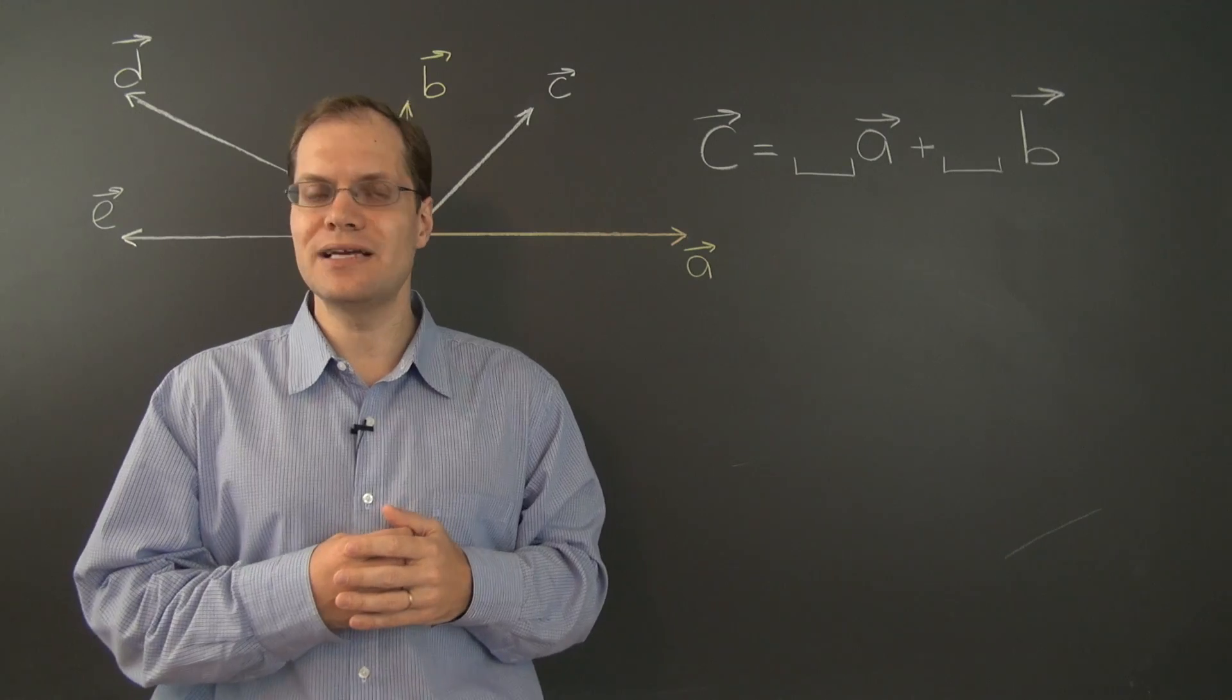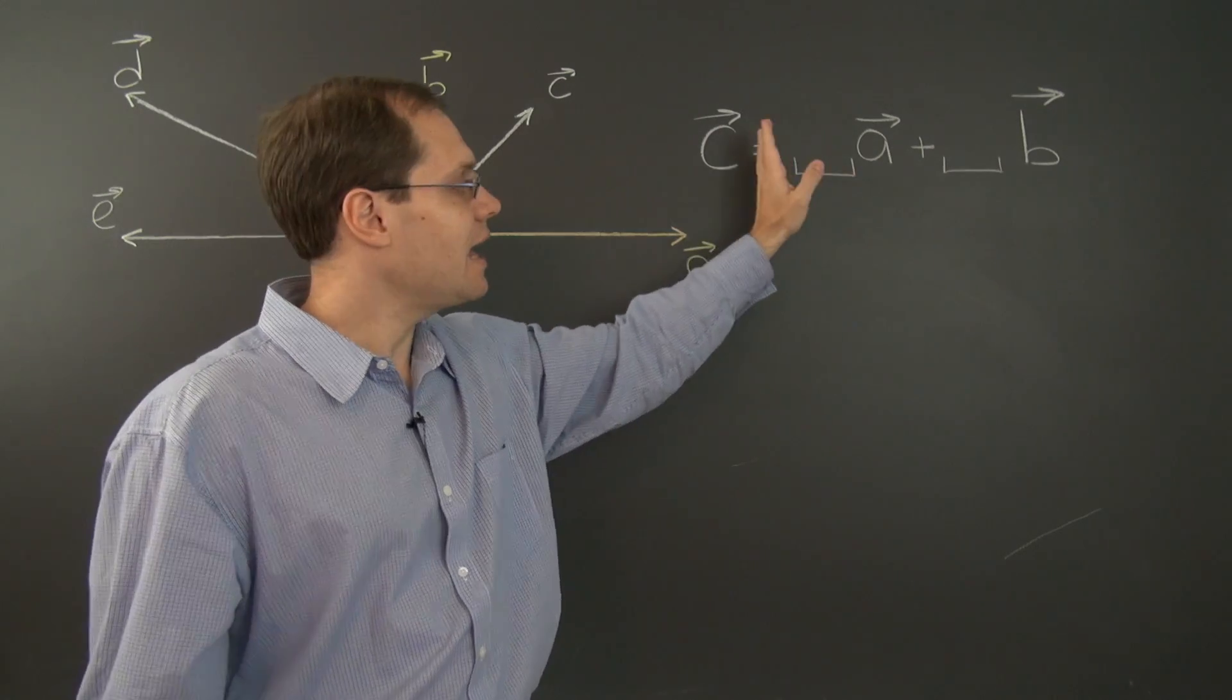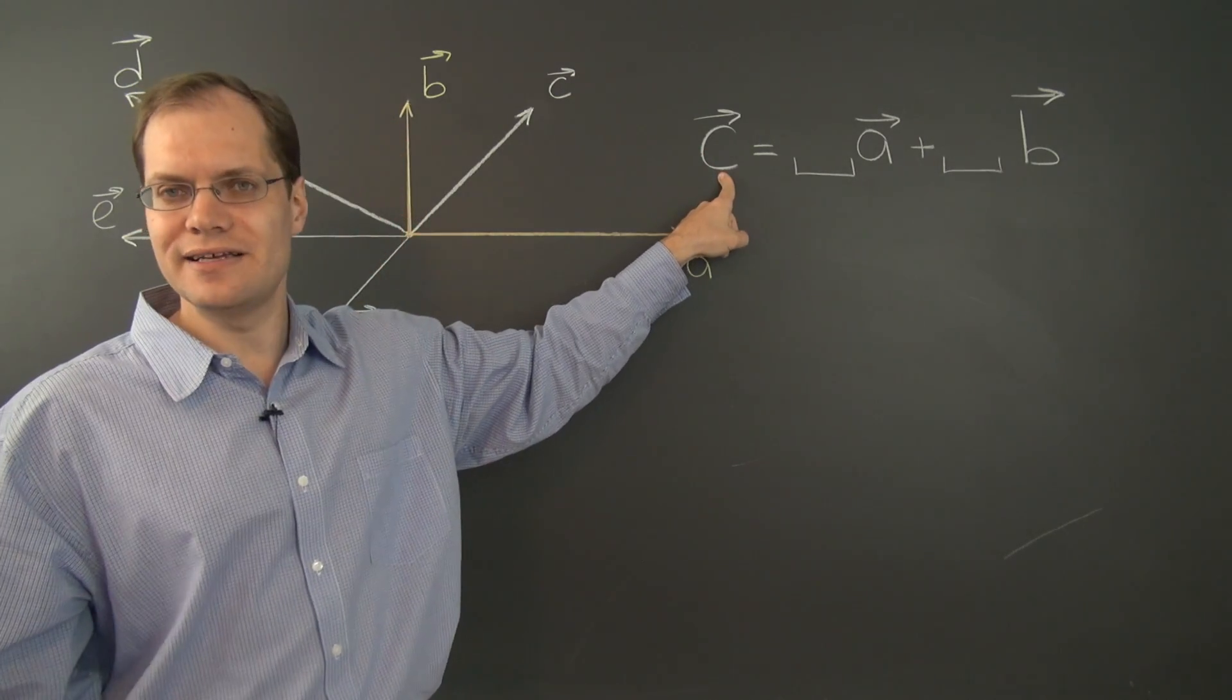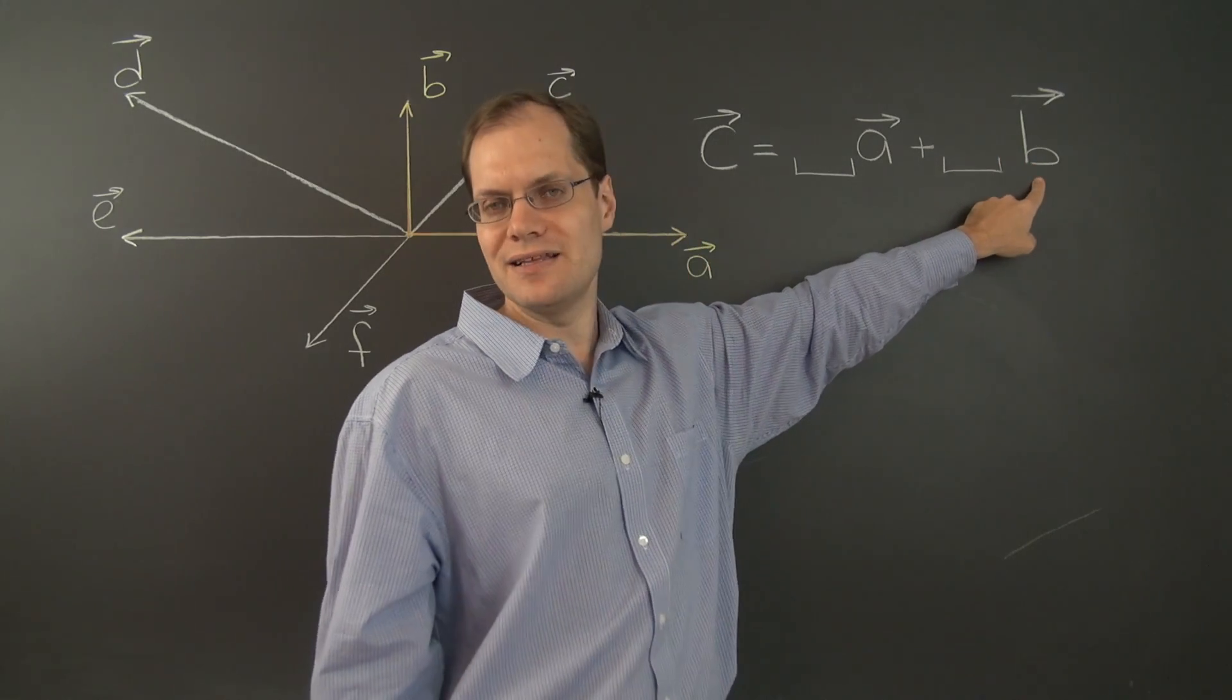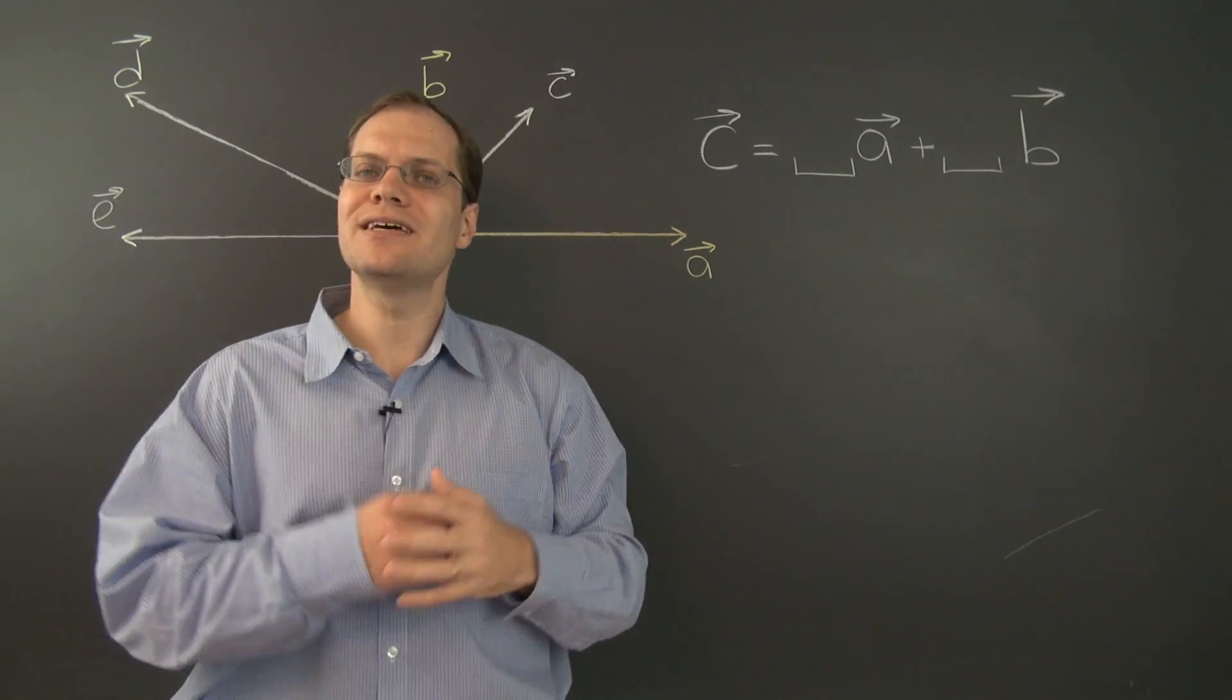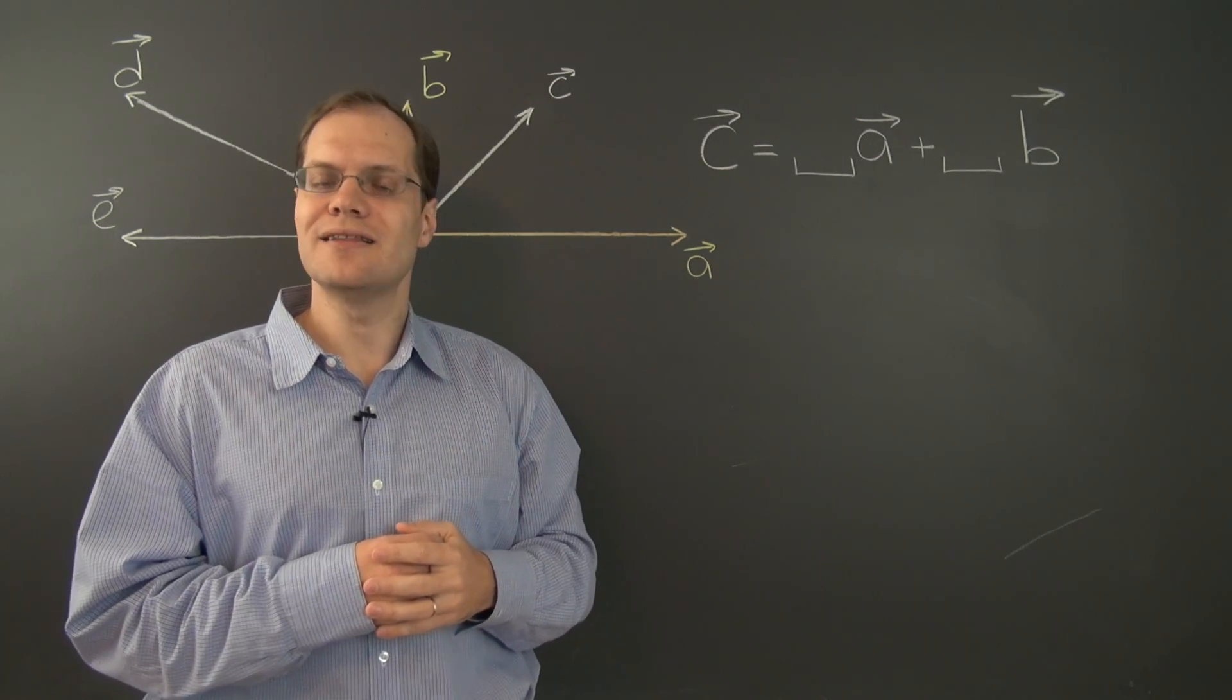So this is the precise sense in which decomposition is opposite of evaluating linear combinations. When we evaluate linear combinations, we're given the vectors and the coefficients of the linear combination, and all we have to do is evaluate it. When performing decomposition, we're given the result of the linear combination and actually the vectors themselves of the linear combination. And our task is to determine the coefficients. That's what linear decomposition is, and that's the precise sense in which it's opposite of evaluating linear combinations.